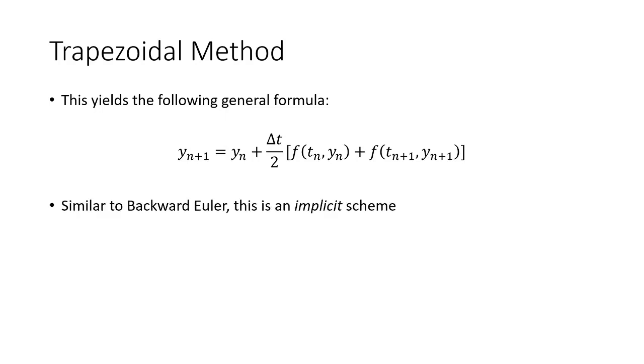Now just like the backward Euler method, this is an implicit scheme. What that means is if it's a linear ODE, we can solve it directly. But otherwise, we're going to have to use either an fzero or fsolve command if you're doing this in MATLAB. We'll go through some examples of that in a future video.